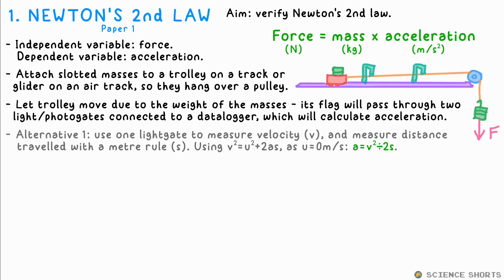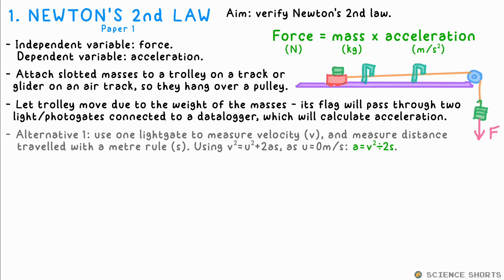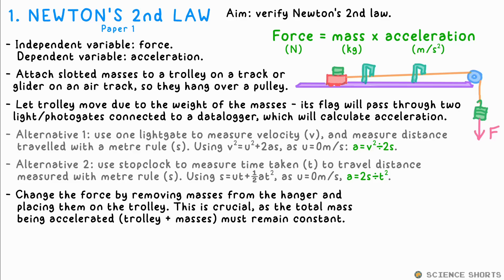There are two alternatives. We can just use one light gate to get its final velocity and use Newton's equation of motion. If you have no light gates, you can just use the stop clock to get the time taken to go a certain distance. Using another of Newton's equations, we can again get the acceleration. We change the force accelerating the trolley by removing masses that these must be placed on the trolley every time.